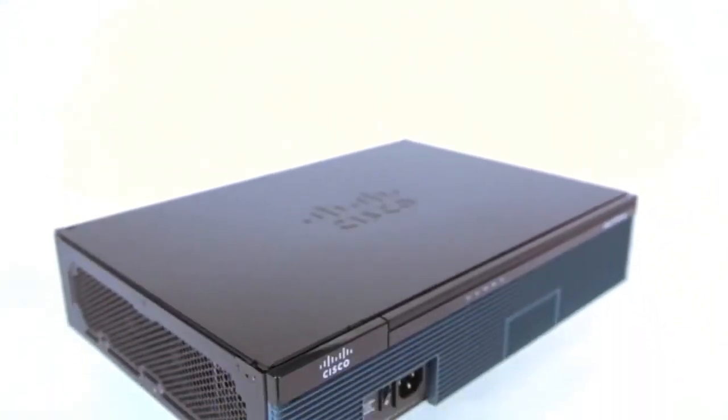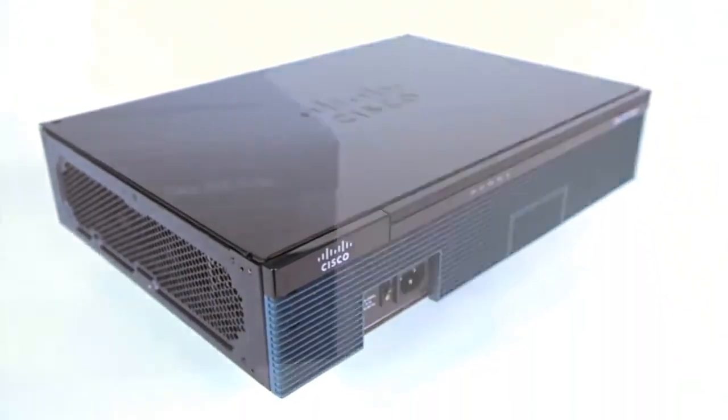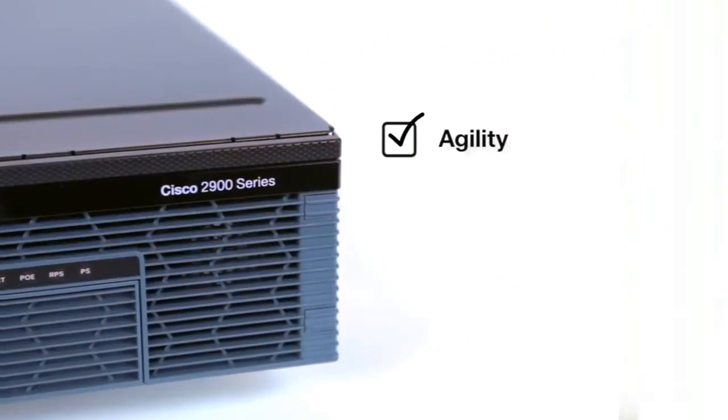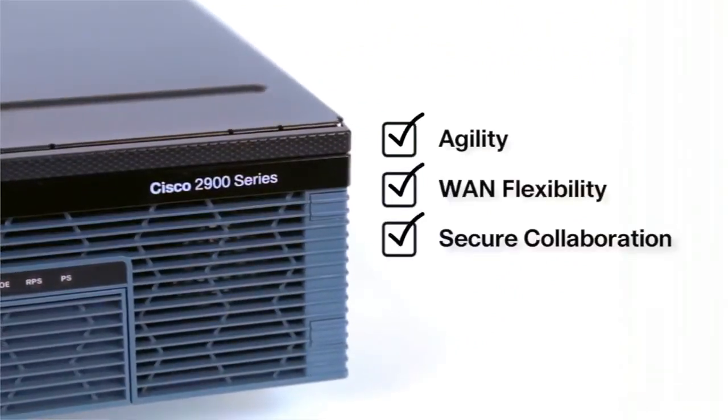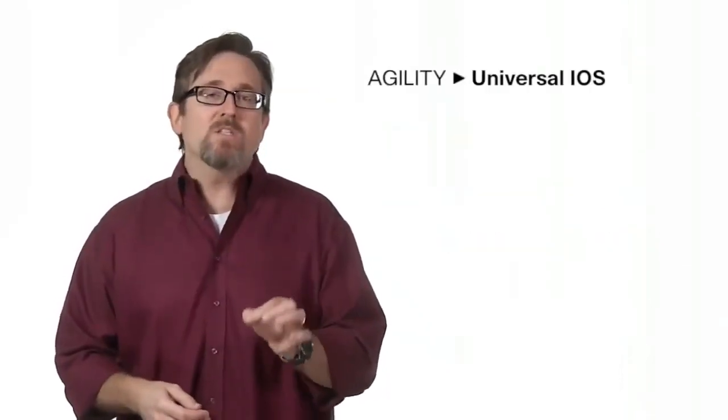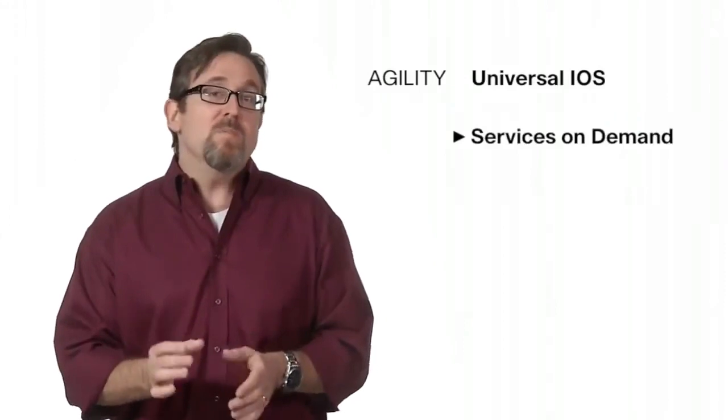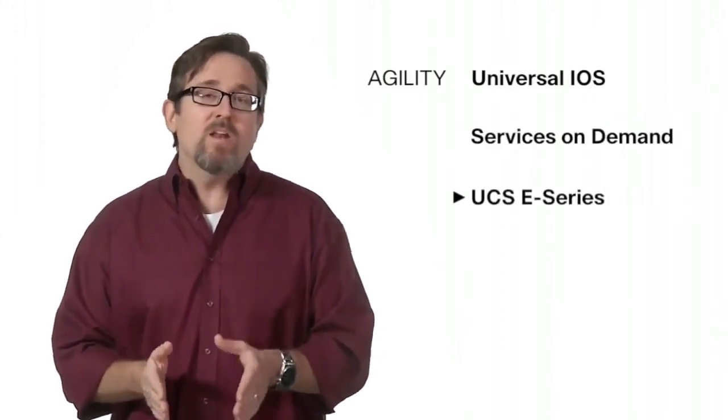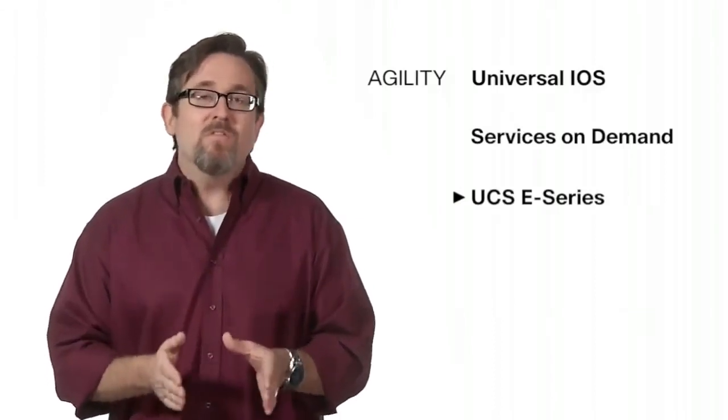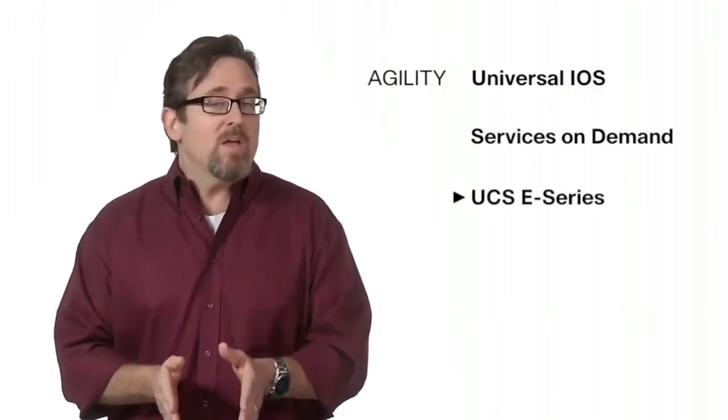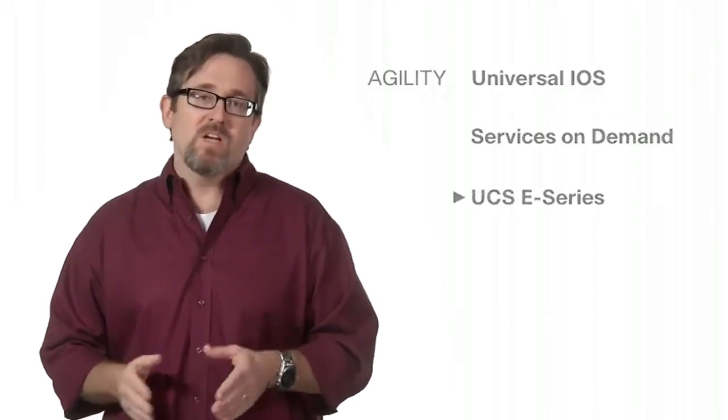The 2900 ISR is ideal for mid-range deployments requiring business agility, WAN flexibility, and secure collaboration as business moves into the mobile cloud era. It's agility through a universal iOS model that allows new services to be activated with a licensing update and integrated UCS eSeries data center class server blade to simplify and scale third-party applications hosting across branch sites.